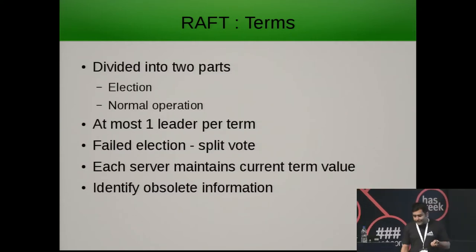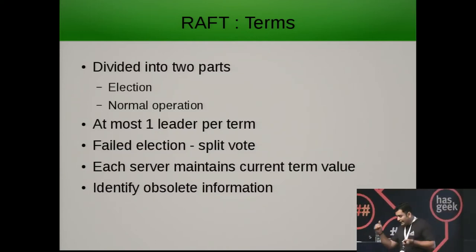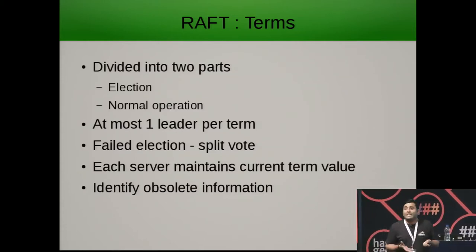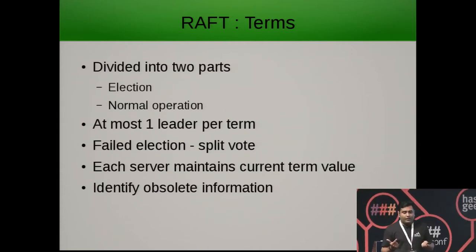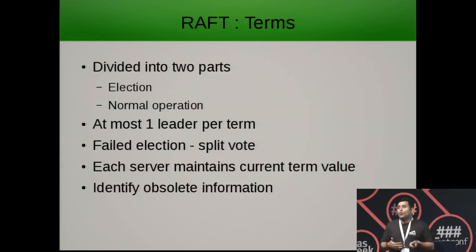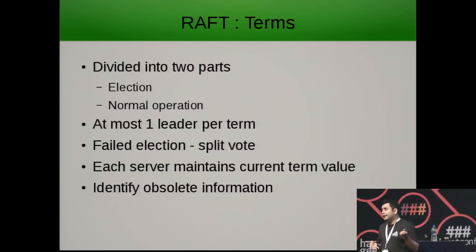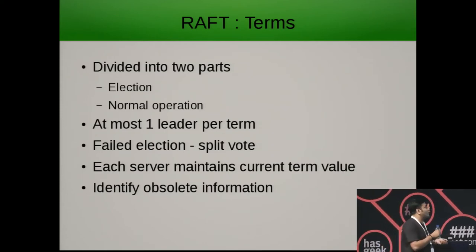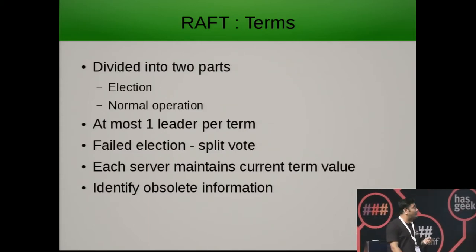Each server maintains the current term value, which is persisted to disk. This term value is crucial when a leader goes down and comes back, to avoid acting on stale information. If a node tries to claim leadership but has an old term value compared to others, when Raft sees that the RPC request carries an outdated term number it will reject that node from becoming leader. Identifying obsolete information is a crucial aspect of achieving consistency and safety in Raft.